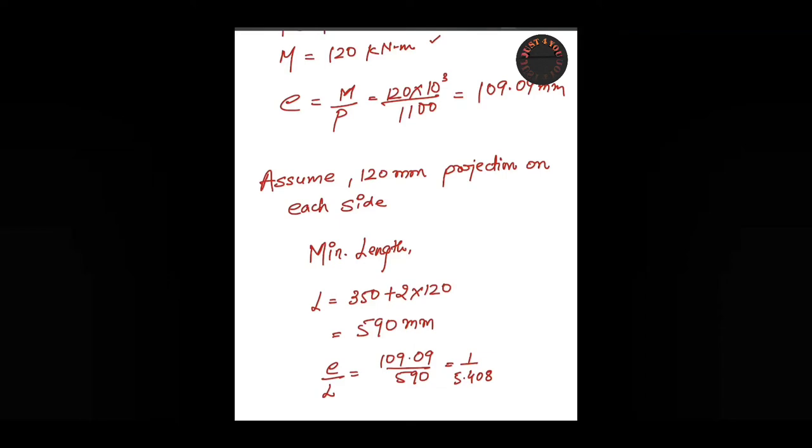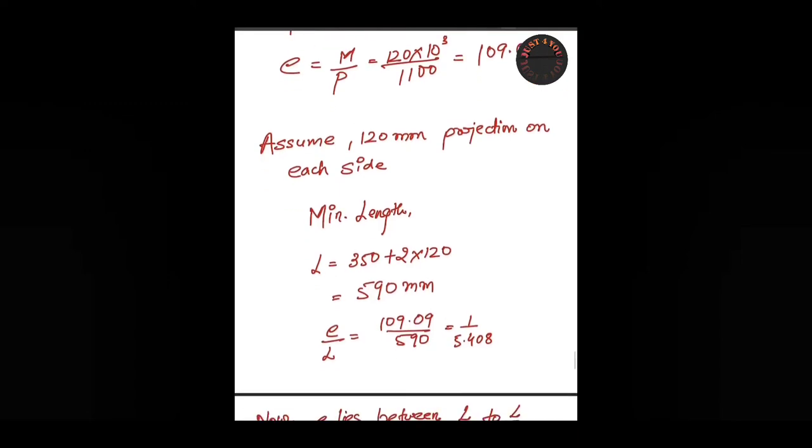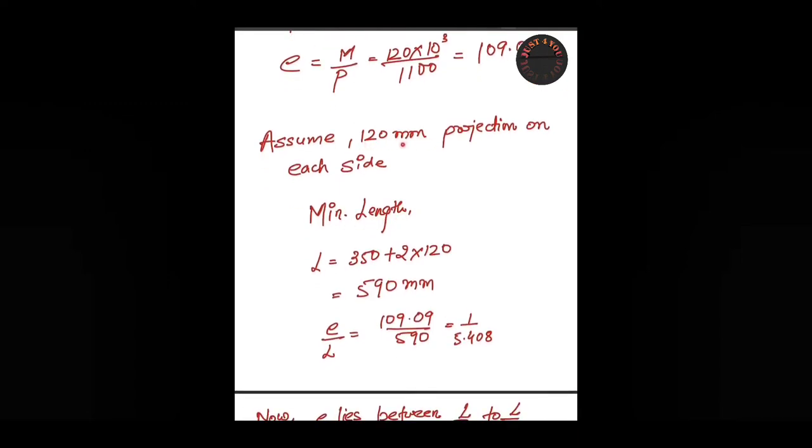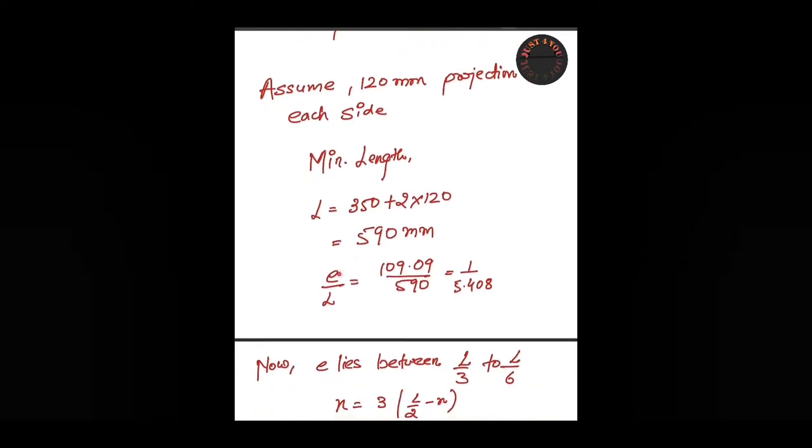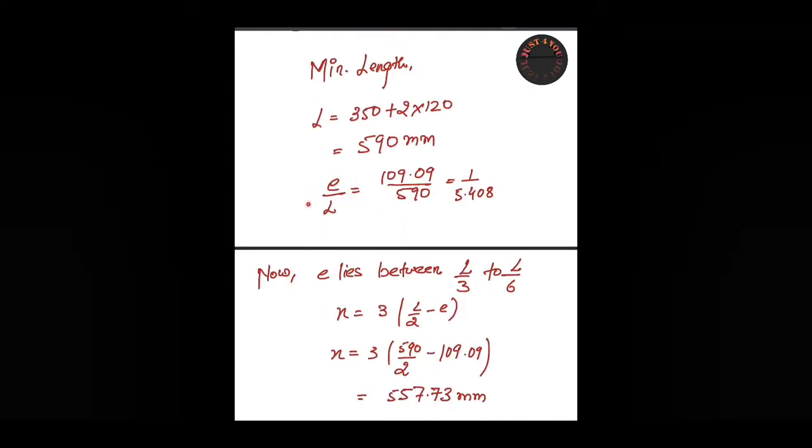We assume 120 mm projection on each side. The minimum length with this projection is 350 plus 2×120 = 590 mm. Putting this in e/l we get 1/5.408. This e/l value helps determine the case. As the value is 1/5.408, it lies between l/3 and l/6, making it Case 2.